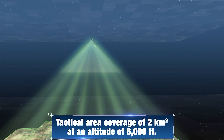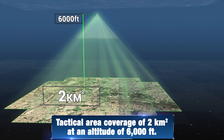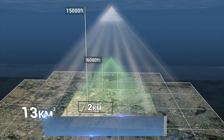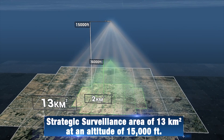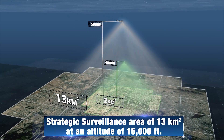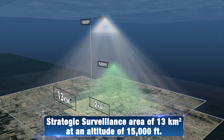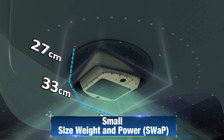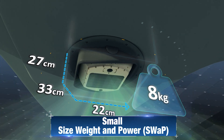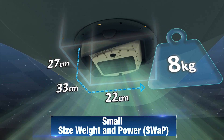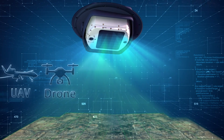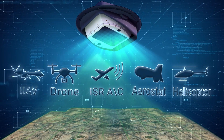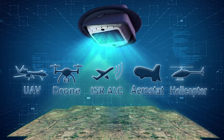A tactical altitude of 6,000 feet will provide a 2 square kilometer surveillance area. A strategic altitude of 15,000 feet will provide a 13 square kilometer surveillance area. IAI's WASP offers a unique small SWaP — size, weight, and power — allowing easy installation on board a wide range of platforms in addition to existing payloads.